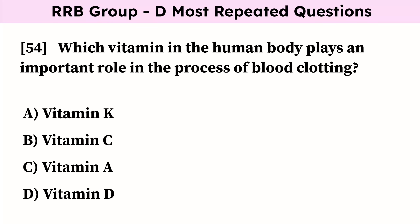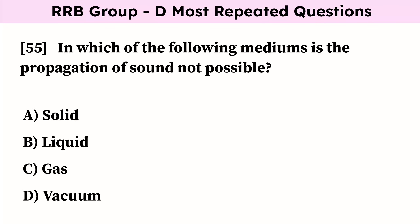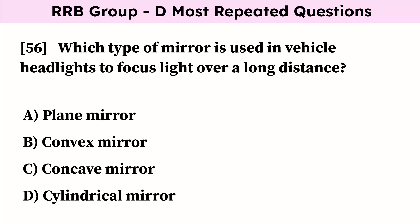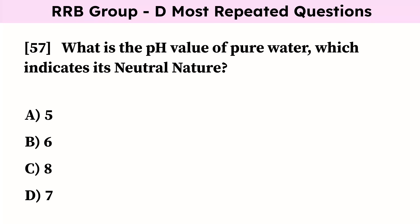Which vitamin in the human body plays an important role in the process of blood clotting? Correct answer is vitamin K. In which medium is the propagation of sound not possible? Correct answer is vacuum. Which type of mirror is used in vehicle headlights to focus light over a long distance? Correct answer is concave mirror. What is the pH value of pure water, which indicates its neutral nature? Correct answer is 7.